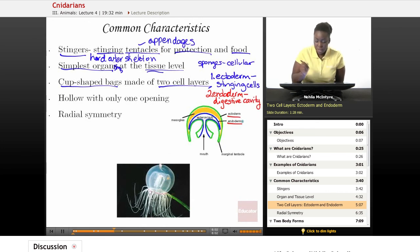Here's a diagram. The green outer layer would be the ectoderm. And then this blue inner layer here would be the endoderm.